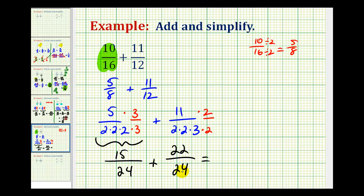And now that we have a common denominator, we can add these fractions. Denominator is going to stay 24 and now we add the numerators. Fifteen plus 22 is equal to 37. 37 and 24 do not have any common factors, so this is a simplified fraction.